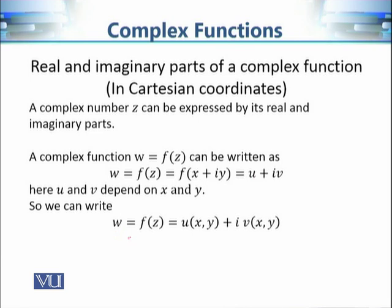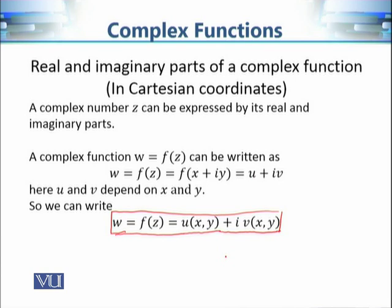So we can say that u and v are in fact functions of x and y. We can write the function in the form U(x, y) because u varies when you change x and y, and similarly V varies as we change x and y. So a complex function is: w = f(z) = U(x, y) + i·V(x, y), where U and V are real-valued functions with input x and y.